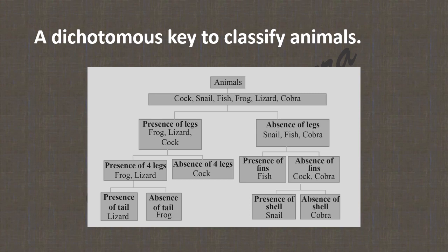Referring to the features of lizard: presence of a tail, presence of forelegs, presence of legs. For cobra: absence of shell, absence of fins, and absence of legs.